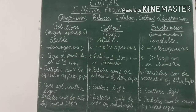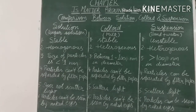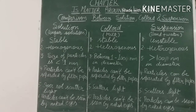The third parameter is size of particles. In a solution, the particle size is very small — less than 1 nanometer, where 1 nanometer equals 10 to the power minus 9 meters. For colloids, the particle size lies between 1 to 100 nanometers in diameter. For suspension, the particle size is bigger — more than 100 nanometers.